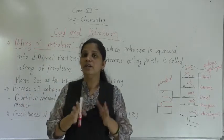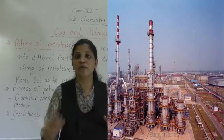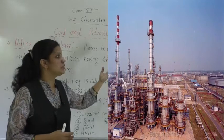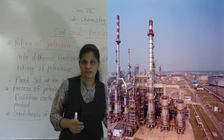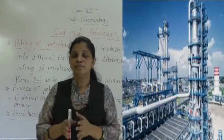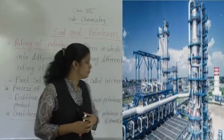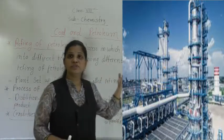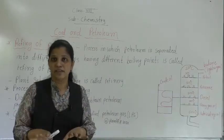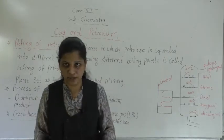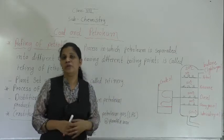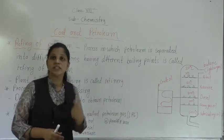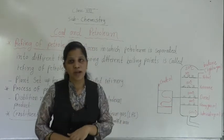For this process we are using a refinery. Refinery means where this refining process occurs — that machinery. See the picture given here — this is known as a refinery. The plant setup for the refining is called a refinery. In this picture you can see many big plants set up to separate the petroleum products. This plant is known as a refinery because it is used to separate the constituents of petroleum.